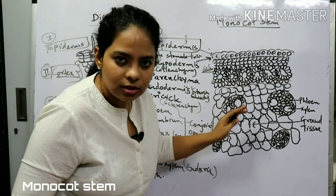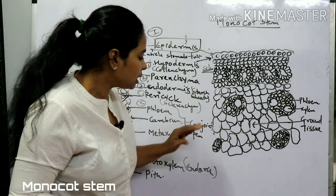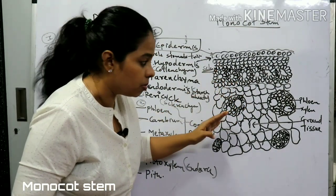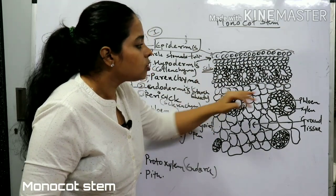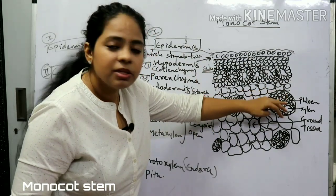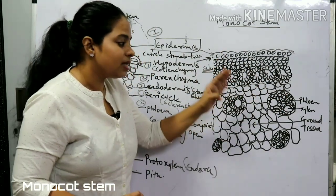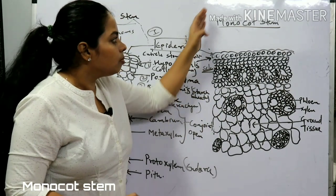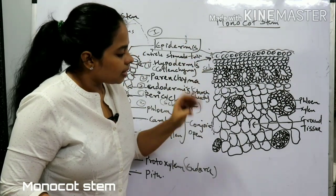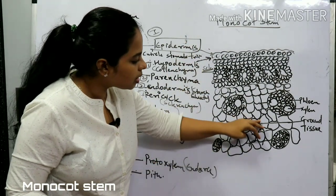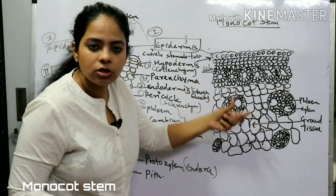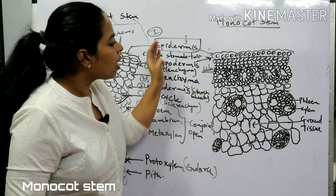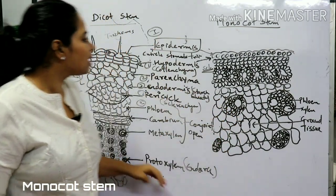In monocot stems, cambium is absent, so there is no secondary growth. Xylem and phloem are present, but without cambium the vascular bundles are closed. Finally, the ground tissue is conspicuous and distinct in monocot stems.